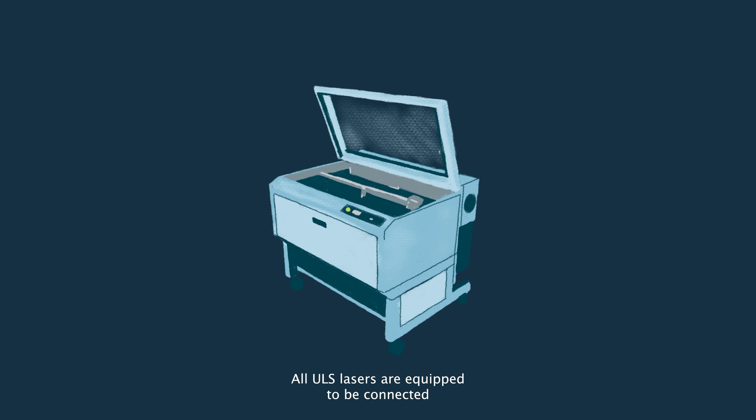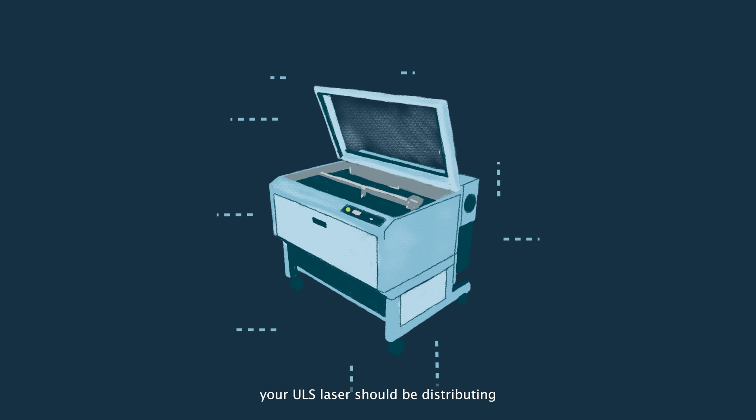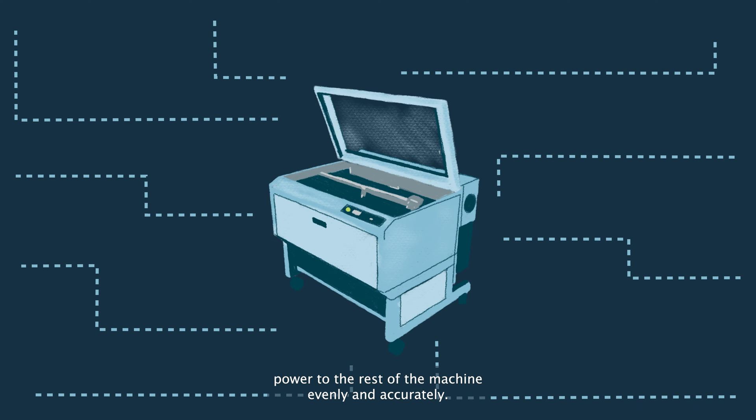All ULS lasers are equipped to be connected to either standard 110 or 220 volt power sources. Assuming everything is working as it should, your ULS laser should be distributing power to the rest of the machine evenly and accurately.